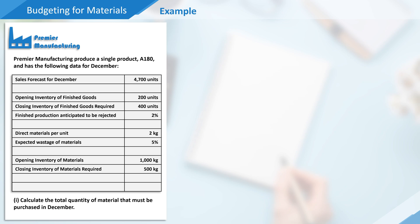The first step we need to complete is the sales budget, which will involve determining a key budget factor that is the starting point for the budget and influences activity for the period. For a manufacturing business this key budget factor will be sales demand, and in our data we're told that the sales forecast for December is 4,700 units.